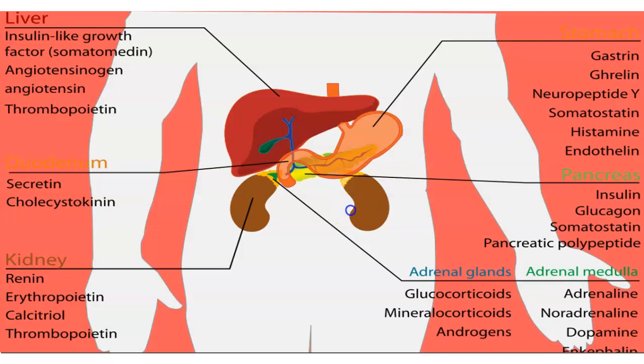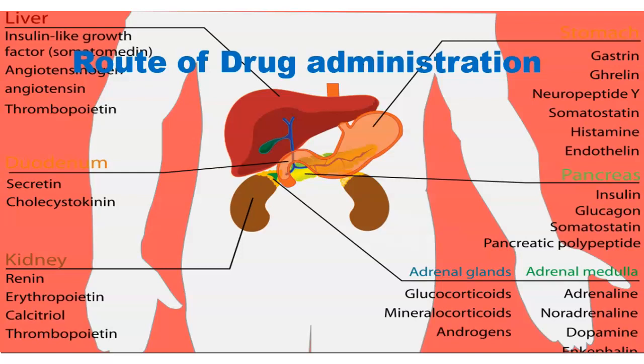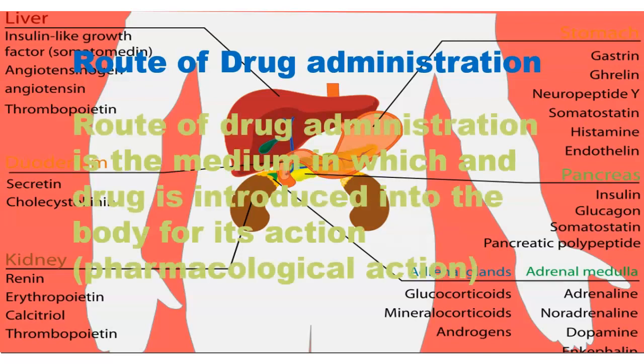Let's start the definitions. Route of drug administration is the medium in which a drug is introduced into the body for its action. This action is called pharmacological action.